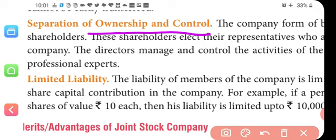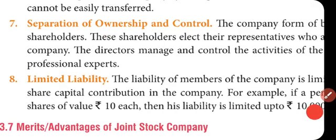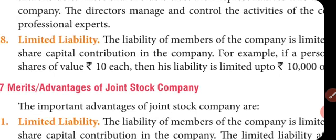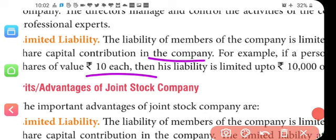The last and most important feature is limited liability. Unlike earlier forms of business, in both cooperative societies and companies, limited liability means that members are not liable to pay company debts from their own personal assets or property. If the company is running at a loss, the members will not pay it from their personal or private property.